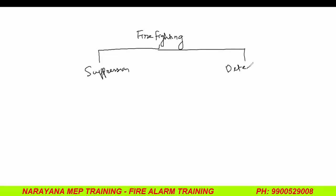In suppression, what are the things? Sprinkler, hydrant, extinguisher, FM 200 — all those things come under suppression. For detection, you have fire alarm and public addressable system.